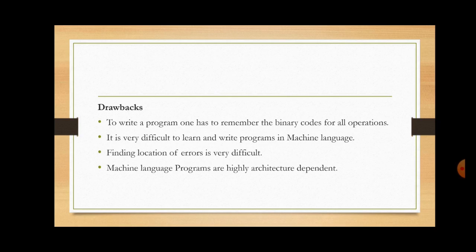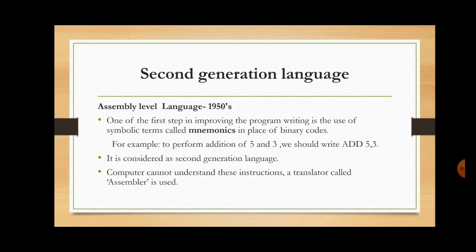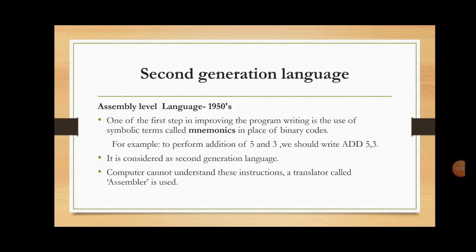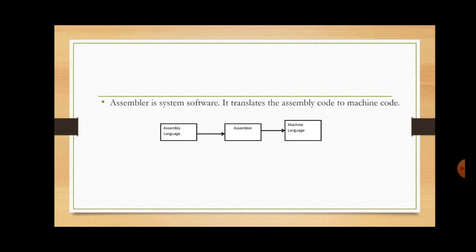These drawbacks led to the development of the next level programming language called assembly level language. One of the first steps in improving program writing is the use of symbolic terms called mnemonics instead of binary digits. For example, to instruct the computer to perform addition of 5 and 3 in assembly level language, we write ADD 5,3. Here, the term ADD is a mnemonic, which is easy for the programmer to understand and remember. Introduced in 1950, assembly level language is considered the second generation language. Since the computer can only understand machine level language, a program written in assembly level language must be converted by a translator called an assembler. An assembler is a system software which translates assembly level language programs into machine level language programs.